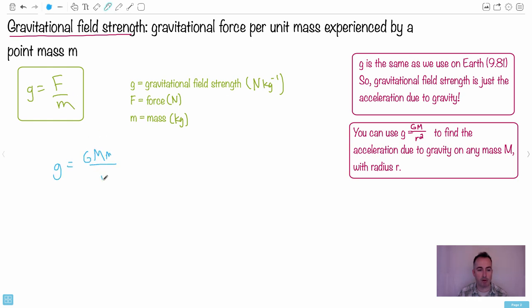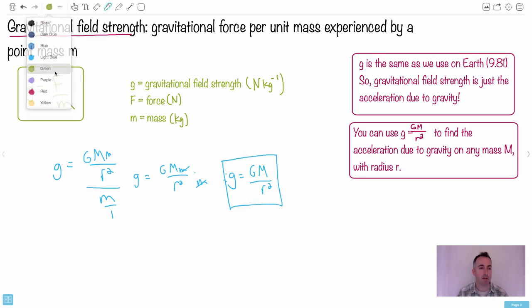That means g equals, F was GMm over R squared, we divide that whole thing by m. So g equals GMm over R squared times 1 over m. Therefore the m's cancel out, and that's why you end up with g equals GM over R squared. This is the other equation we get. That's this one right here. You don't have to memorize this, they gave you this too.